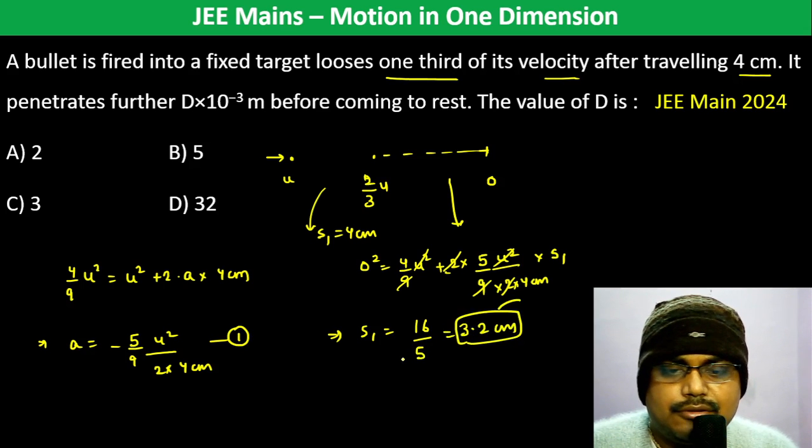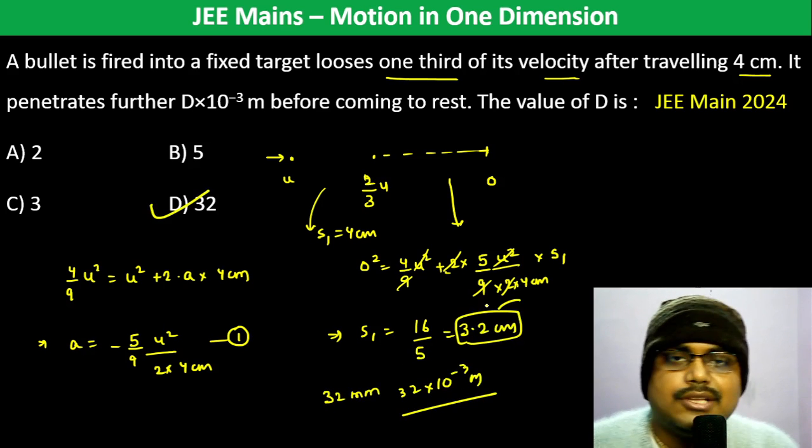This is basically 32 millimeters, so 32 into 10 to the power minus 3 meters. Therefore D is the answer. Thank you.